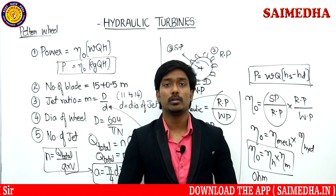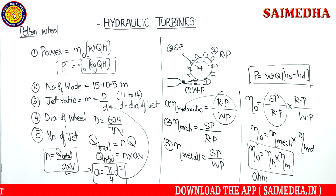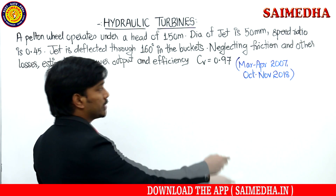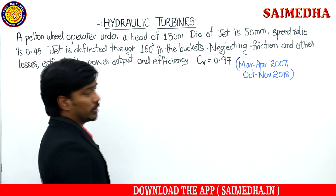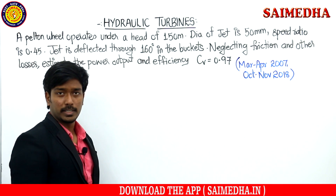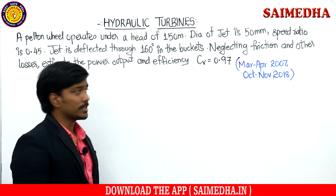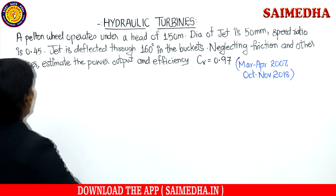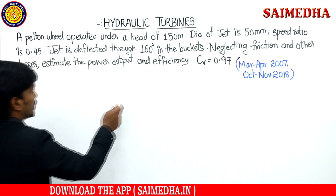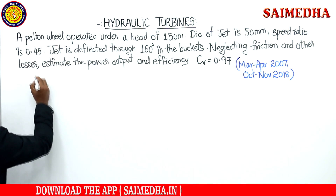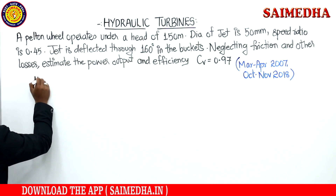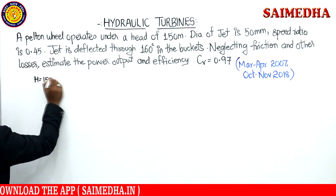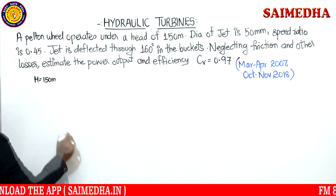Pause the video and note it down. Now observe the question given on the board. This question appeared in the semester examination in March/April 2007 and October/November 2018. A Pelton wheel operates under a head of 150 meters.